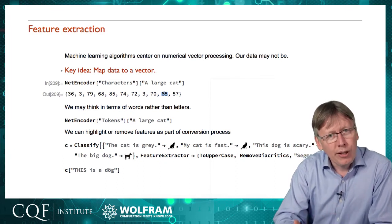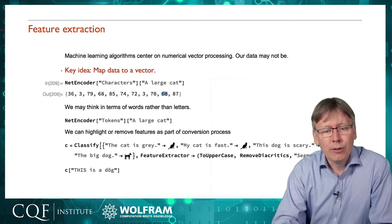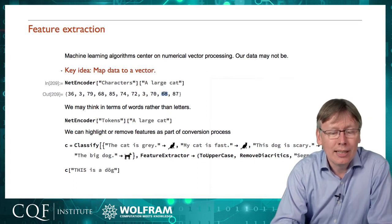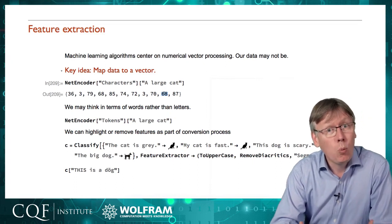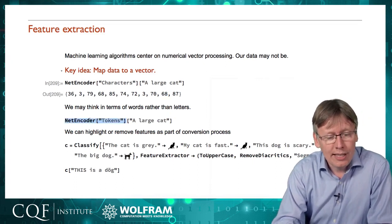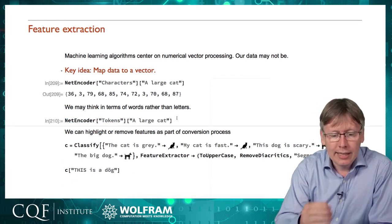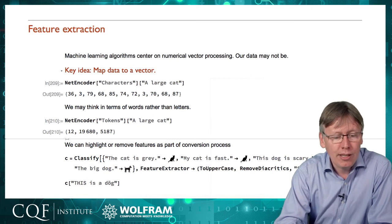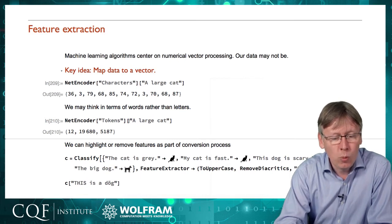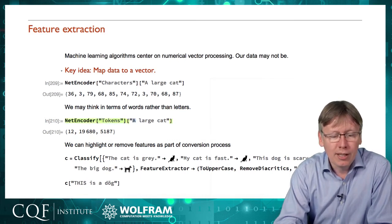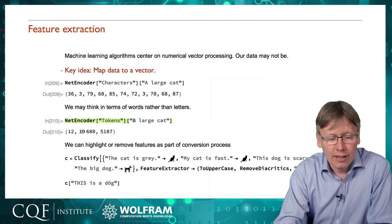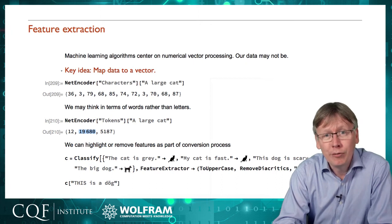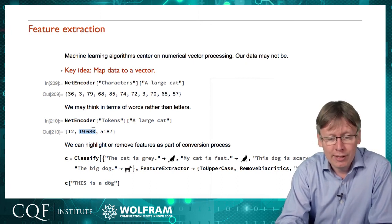Another way you could think about that is these aren't individual letters - that might be important if we were doing things like spell correction as a task. We might think of them as words. Here this NetEncode of tokens is taking exactly the same string, but this time it's turning it into a vector of just three that represents effectively the words. You can imagine if we had a large dictionary here that 'large' is the 19,680th word in the dictionary.